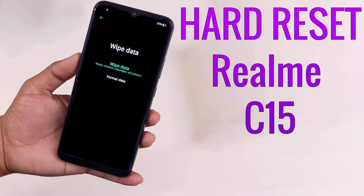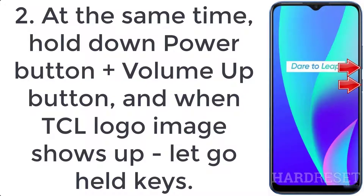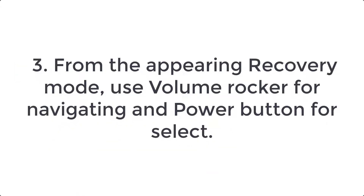How to hard reset Realme C15. Step 1: Press and keep the power button, then choose power off. Step 2: At the same time, hold down the power button plus volume up button, and when the TCL logo image shows up, let go of both keys. Step 3: From the appearing recovery mode, use the volume rocker for navigating and the power button to select.